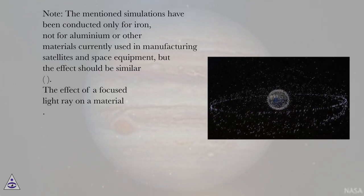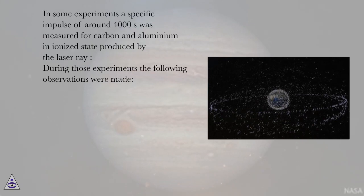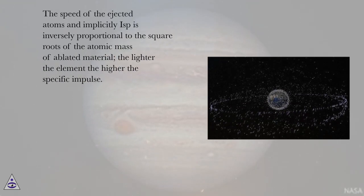Note, the mentioned simulations have been conducted only for iron, not for aluminum or other materials currently used in manufacturing satellites and space equipment, but the effect should be similar. The effect of a focused light ray on a material. In some experiments a specific impulse of around 4000 seconds was measured for carbon and aluminum in ionized state produced by the laser ray. During those experiments the following observations were made. The speed of the ejected atoms and implicitly ISP is inversely proportional to the square roots of the atomic mass of ablated material, the lighter the element the higher the specific impulse.